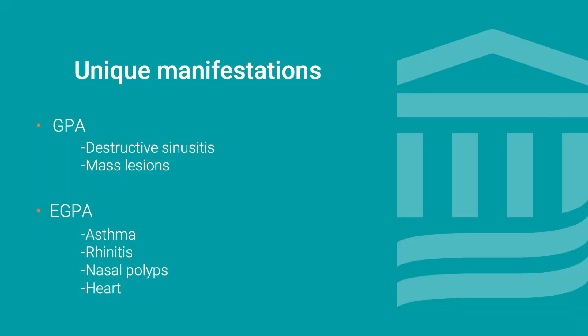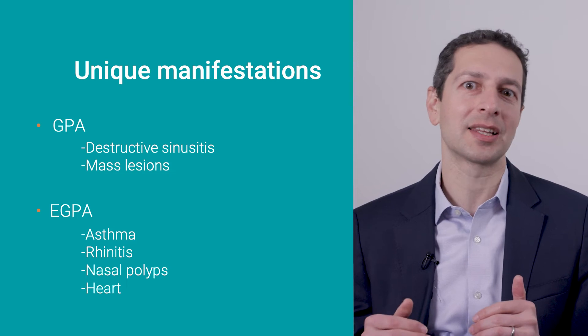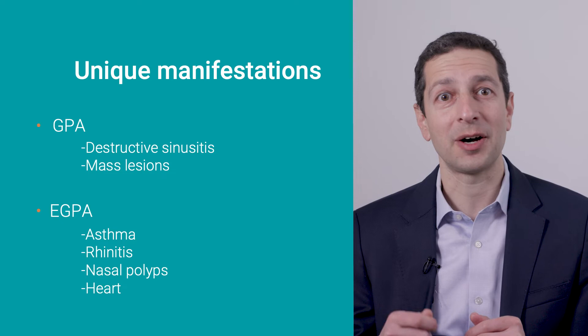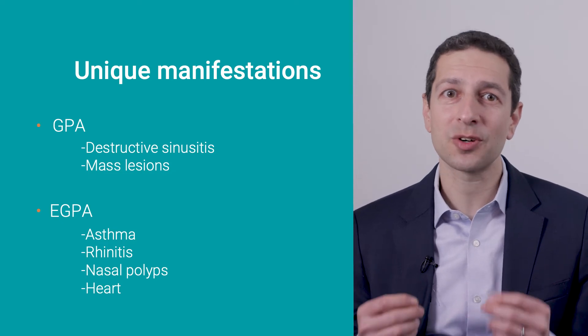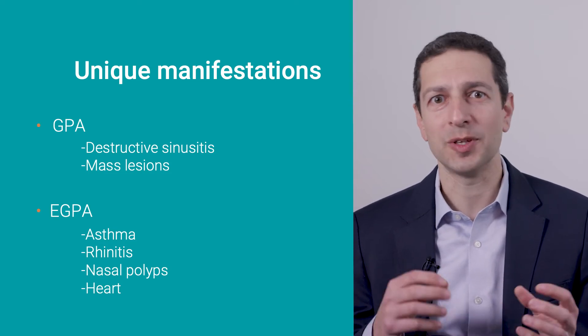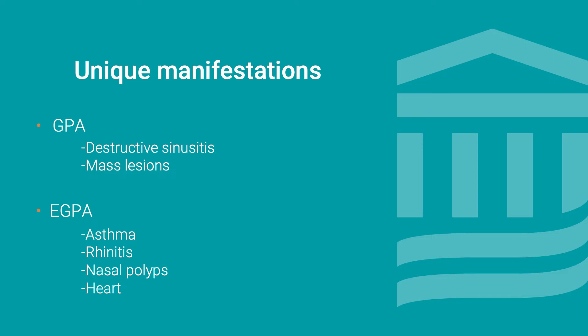The conditions are different, though, because they do have some unique manifestations. For example, GPA frequently causes very severe sinus inflammation — sinusitis that can be painful and destroy some of the structures and bones in the nose. eGPA is unique because there's usually a very high level of eosinophils in the blood, and patients often develop pretty severe asthma, runny nose, and nasal polyps before the onset of vasculitis manifestations in the lung and kidney.